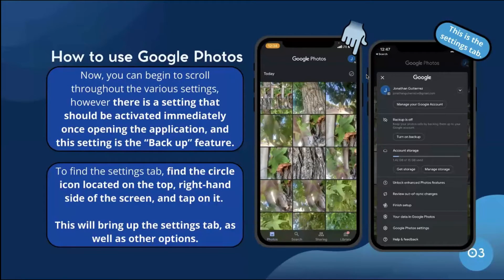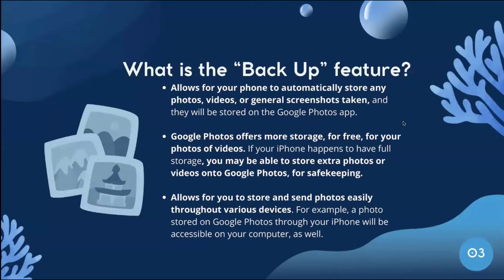Now you can begin to scroll through the various settings, but there is one setting that should be activated immediately: the Backup feature. To find the settings tab, locate the circle icon on the top right-hand side of the screen and tap on it. This will bring up the settings tab and other options. The Backup feature allows your phone to automatically store any photos, videos, or screenshots taken, saving them to Google Photos.